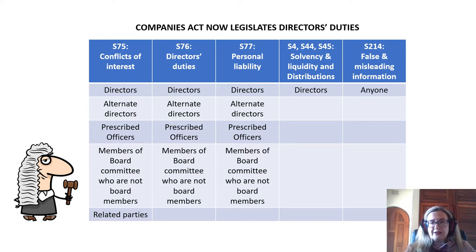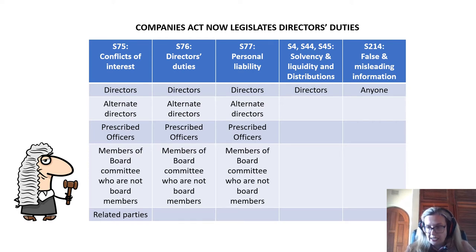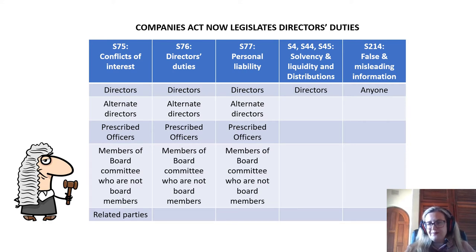It is very important for directors to understand how far the reach of Section 75 is. Sections 76 and 77 cover directors, alternate directors, prescribed officers, and board committee members. Section 4 and its related Sections 44 and 45 only relate to directors. And very frighteningly, Section 214 relates to anyone — even an accountant in a large accounting department who falsifies numbers could be held responsible. It is a very broad section of the Companies Act that everyone needs to be aware of.